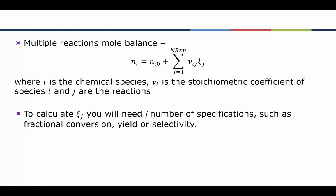For multiple reactions, the mole balance is better done with the extent of reaction method. Moles of each species out equals moles of that species in, plus the stoichiometric coefficient multiplied by the extent of reaction for each reaction summed over all reactions. To calculate the extent of reaction, if there are J number of reactions, we need J number of specifications such as fractional conversion, yield, or selectivity.